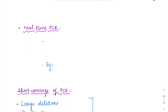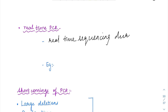Then we have real-time PCR. As the name suggests, PCR is going to be real time. In regular PCR you extract, then amplify, then sequence. But here the sequencing is going to happen in the exponential phase itself — so during the amplification you can simultaneously sequence it. So real-time sequencing during amplification, that is during the exponential phase of PCR.